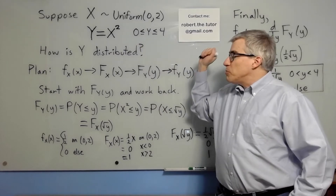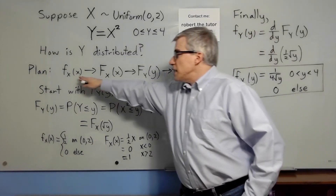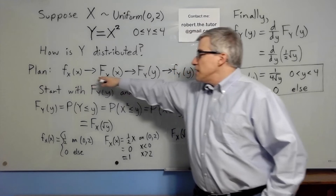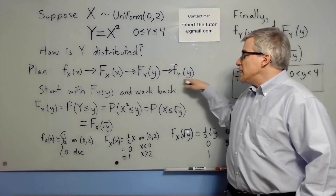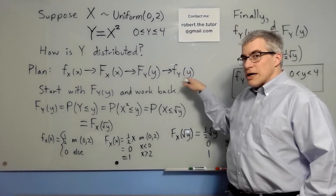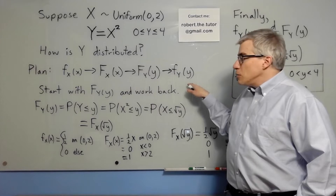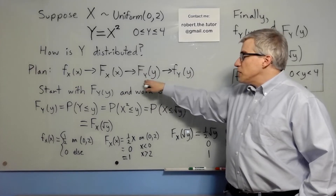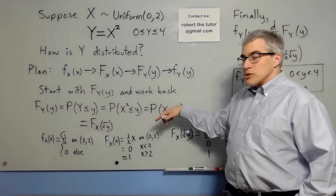The plan is to start with the density of x, get the CDF of x, then the CDF of y, then the density of y. That's how they're related. We'll start with the CDF of y and work backwards.